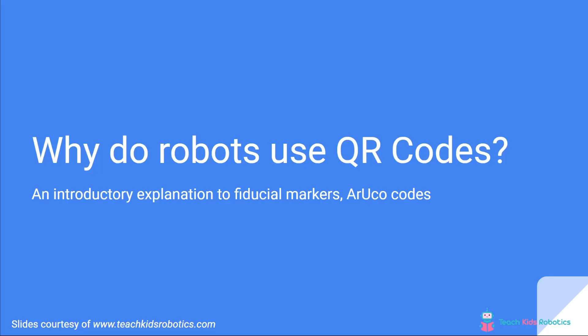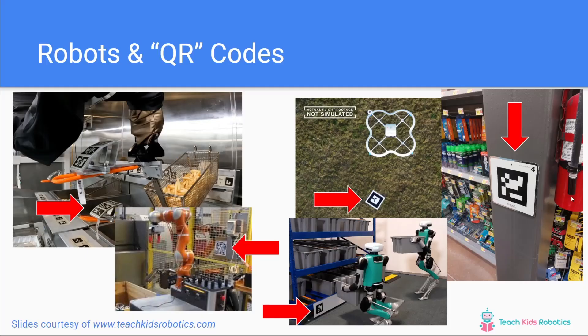Hey guys, it's Daniel with Teach Kids Robotics, and today we'll be talking about why robots use QR codes — an introductory explanation of fiducial markers and ArUco codes. If you've been seeing robots in the news lately, you might be noticing a lot of QR code-looking objects nearby these robots. For example, Miso Robotics has Flippy, the french fry-making robot, that seems to be using a lot of these QR code-looking objects around its system.